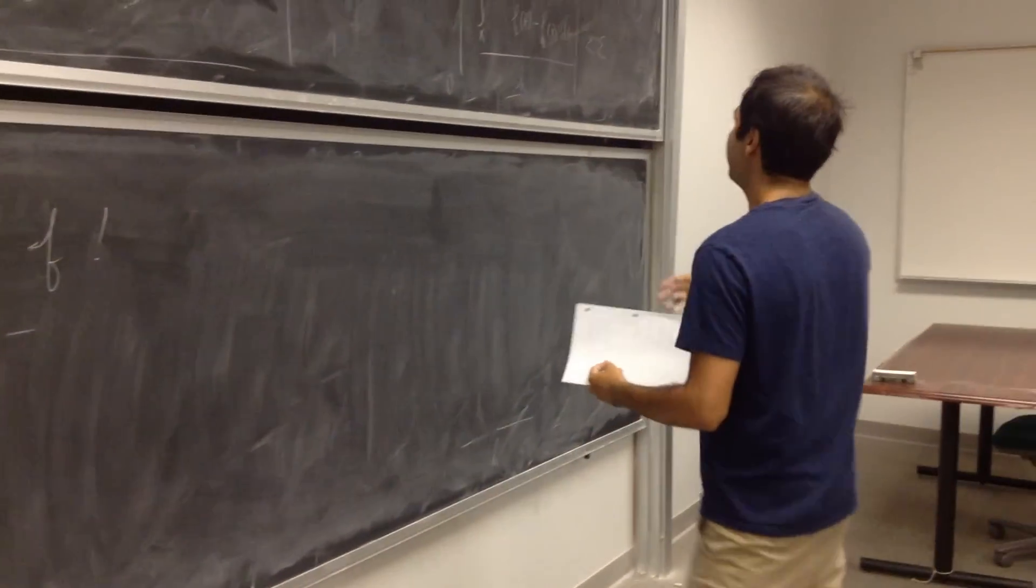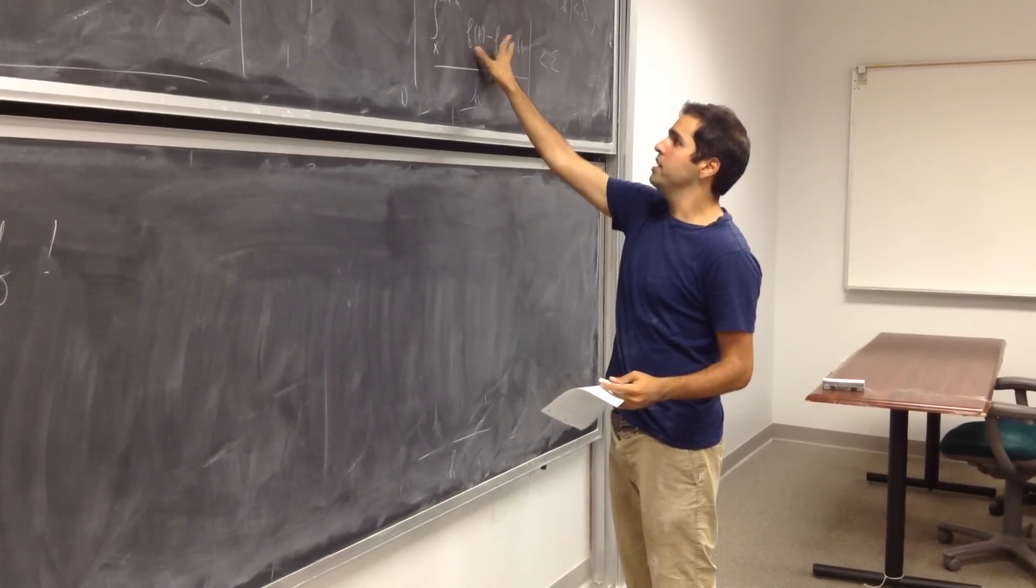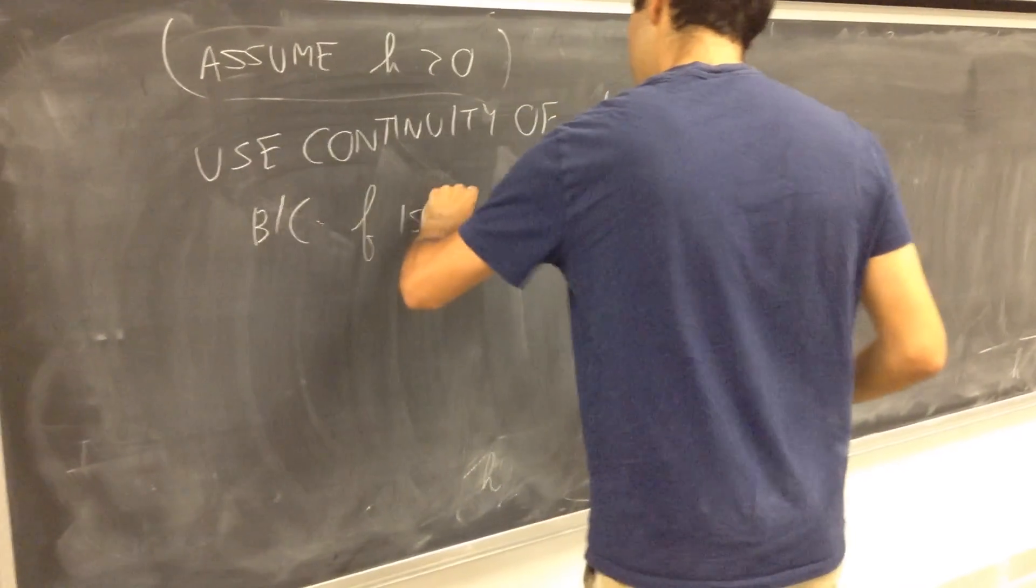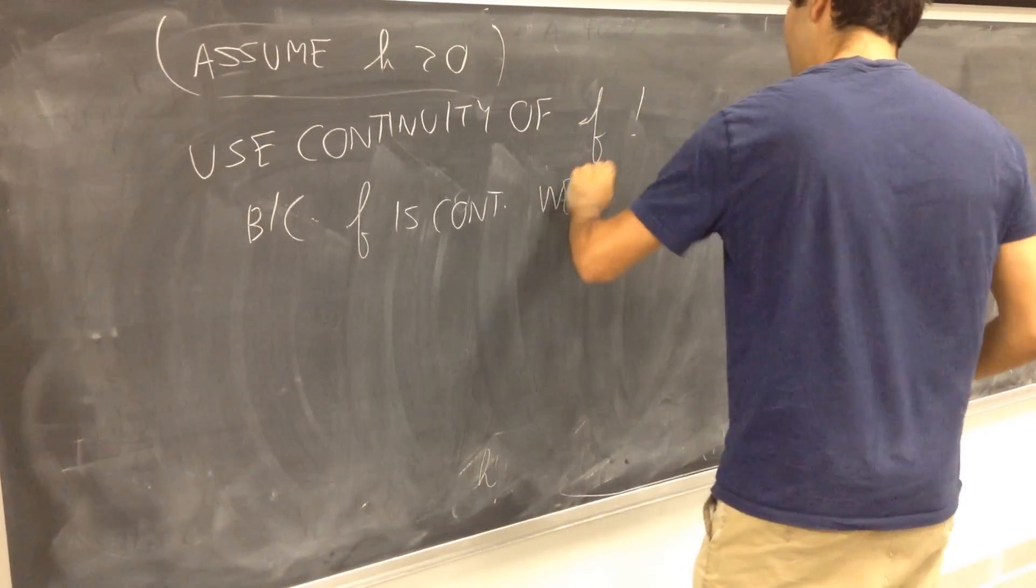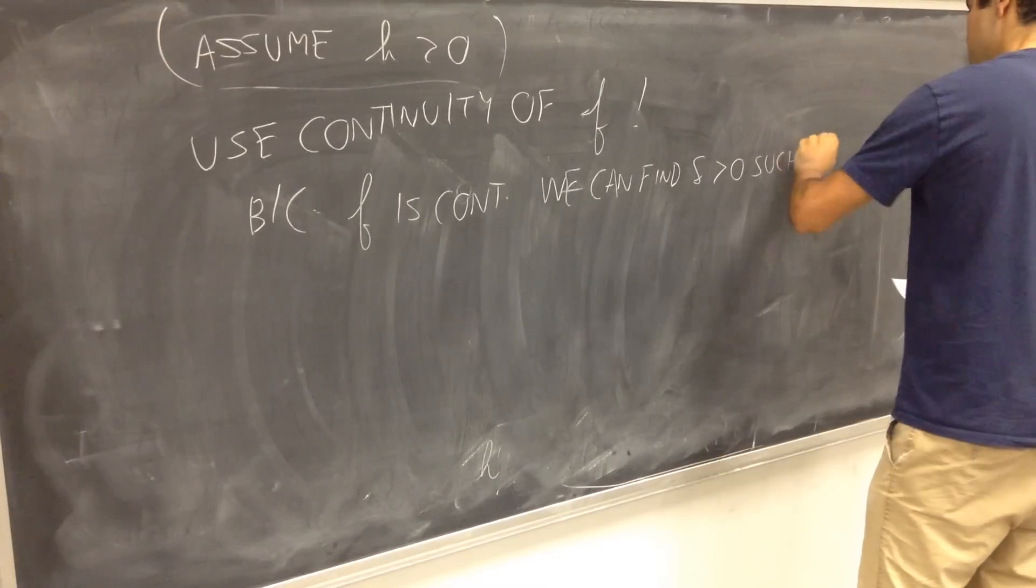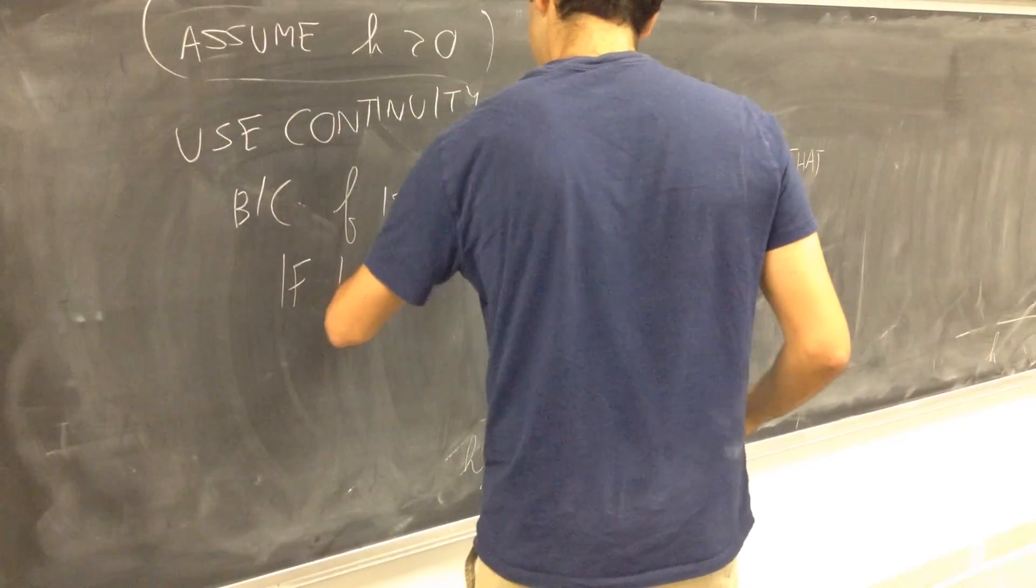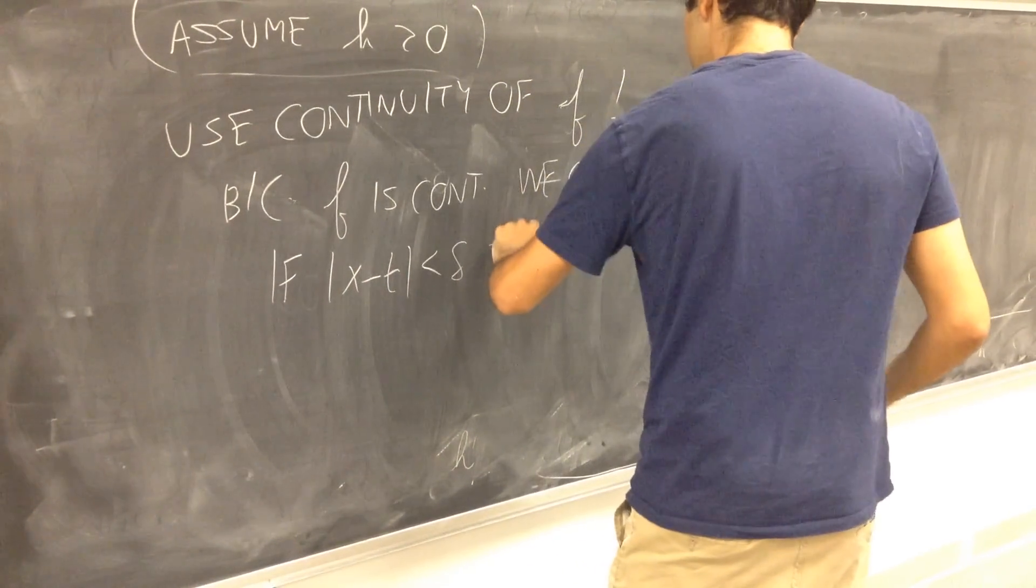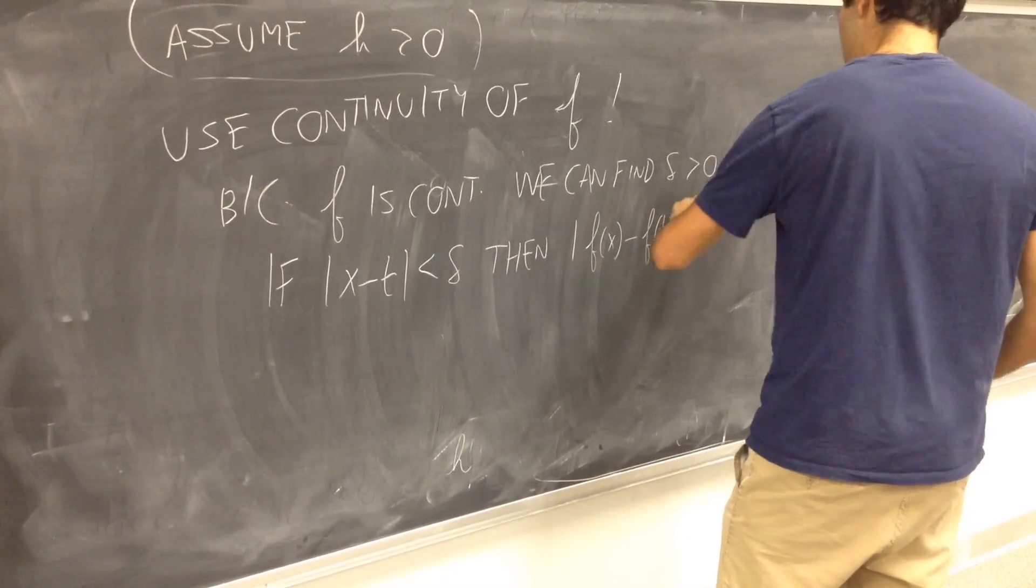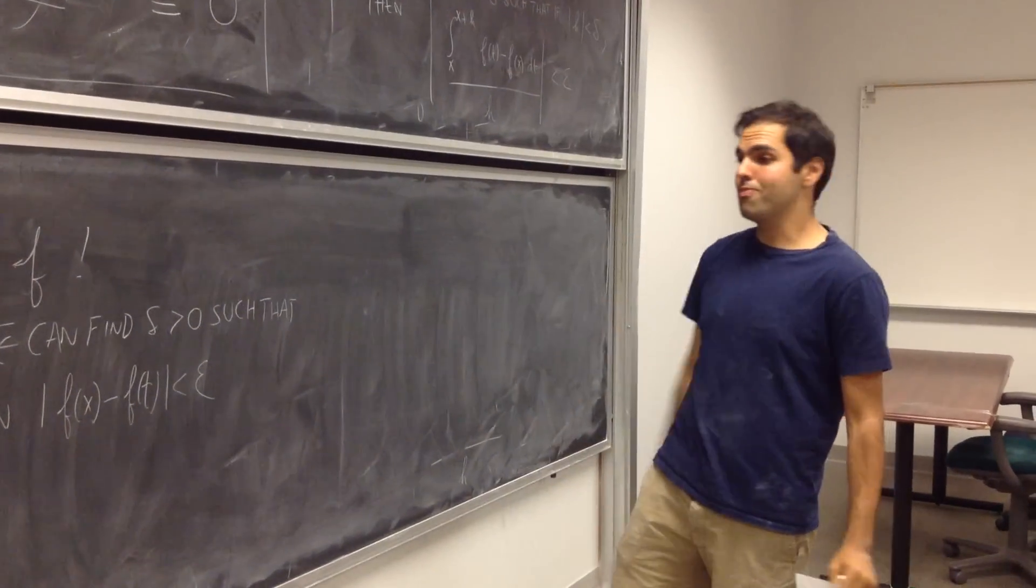So use the continuity of f. What does it mean for f to be continuous? It means that if t and x are close enough, then this quantity is as small as we want. So because f is continuous, we can find delta greater than zero such that if x minus t is less than delta, then f of x minus f of t is less than epsilon. Now this delta might depend on x, but here x is fixed, so we're completely fine.